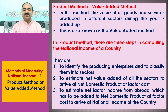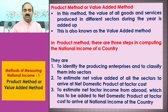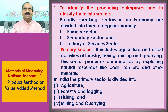The three steps are: 1. To identify the producing enterprises and to classify them into sectors. 2. To estimate net value added of all the sectors to arrive at net domestic product at factor cost. 3. To estimate net factor income from abroad, which has to be added to net domestic product at factor cost to arrive at national income of the country.